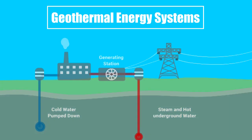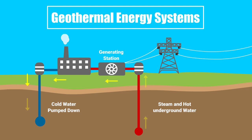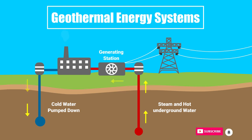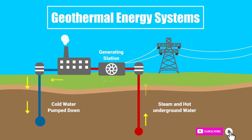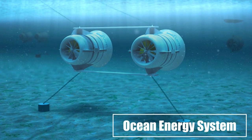Geothermal energy system: these systems use the hot underground water heated by the earth's core. By digging deep wells, the wells bring the hot water near the surface to be pumped using a turbine to create electricity.